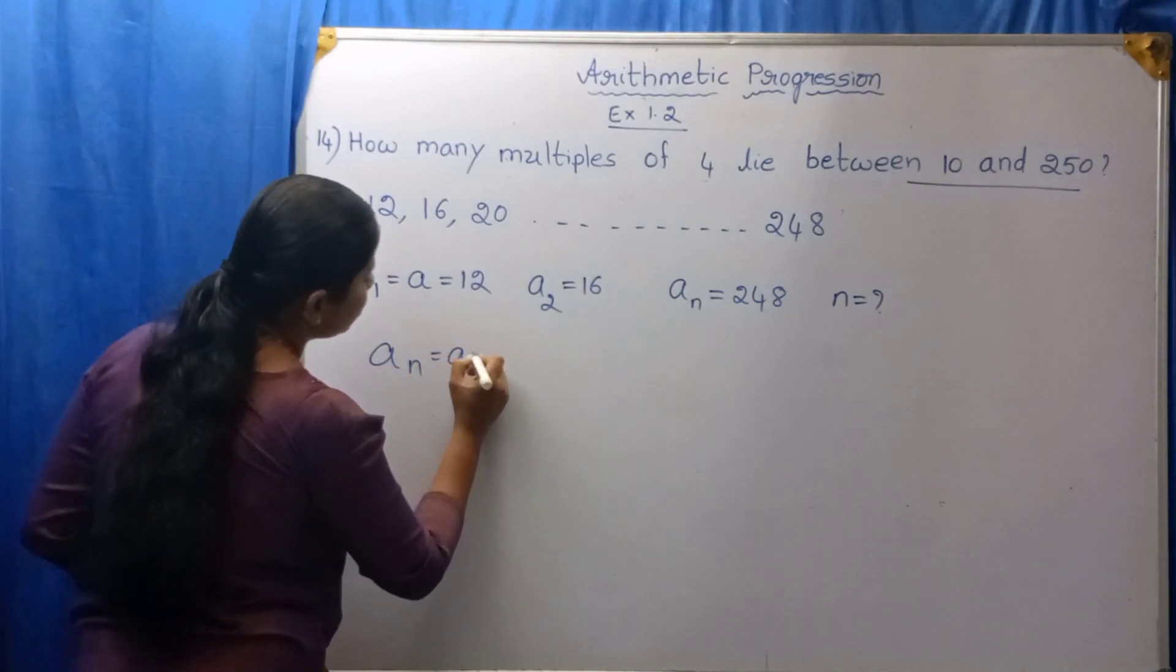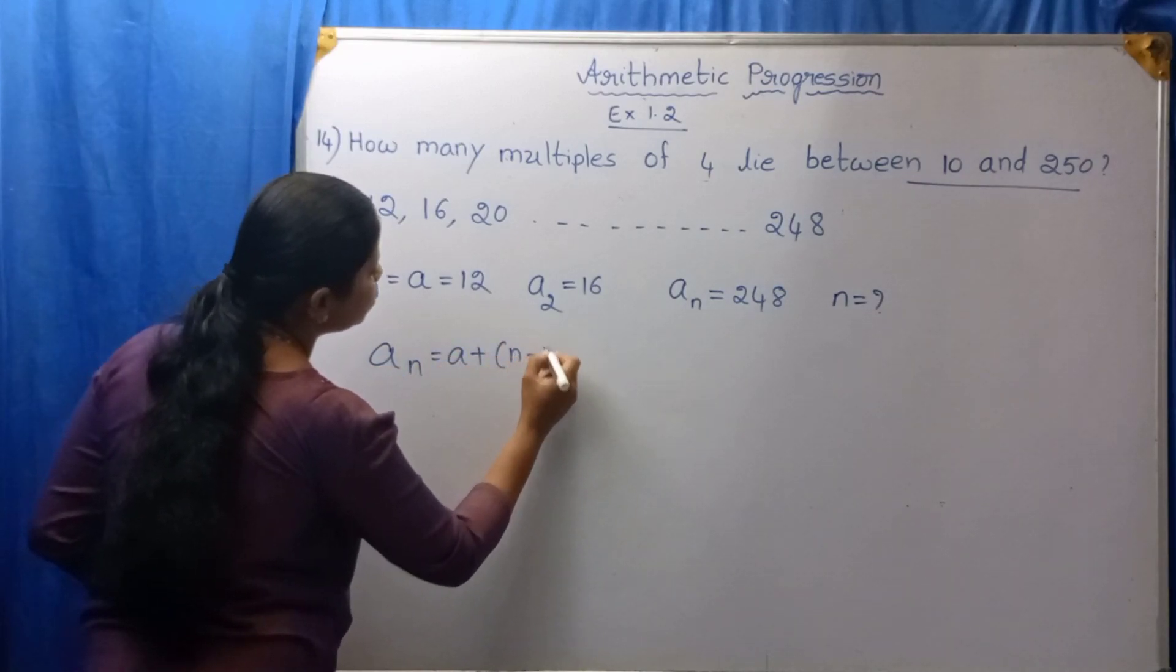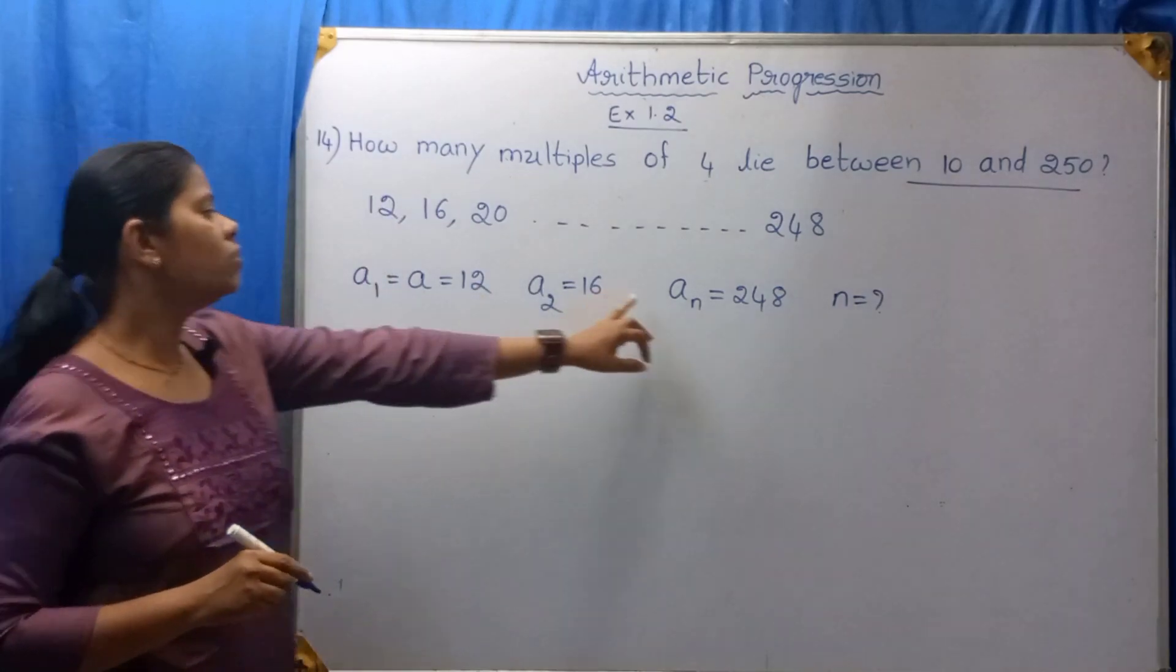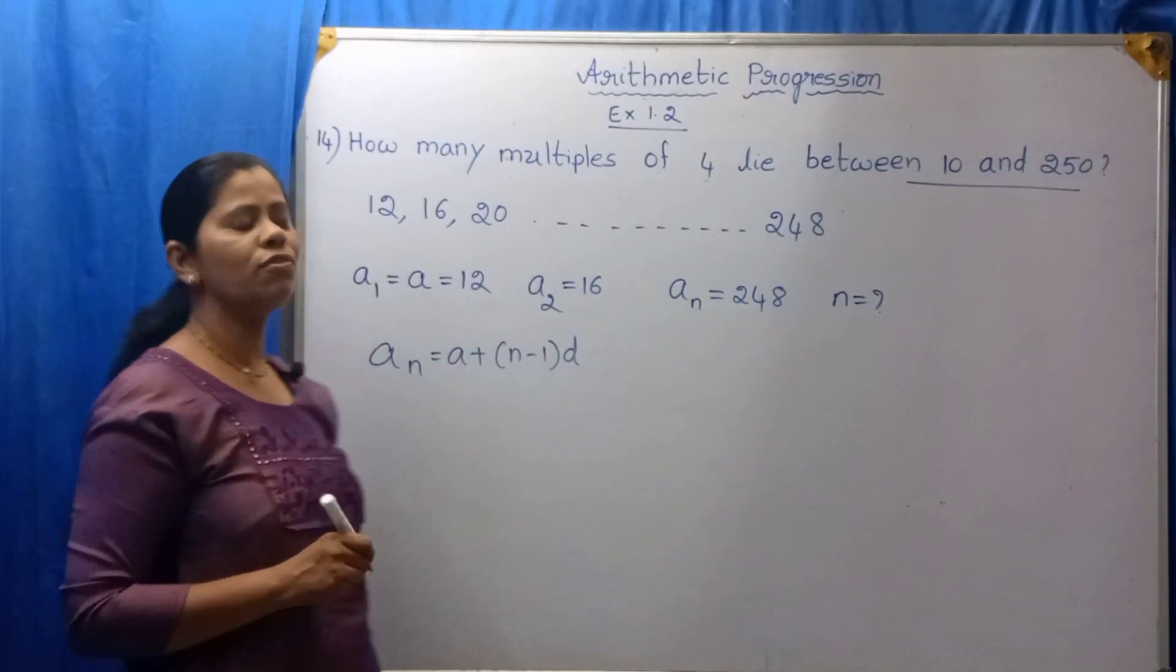Aₙ is equal to A plus (n minus 1) into d. In the place of Aₙ, we have 248.